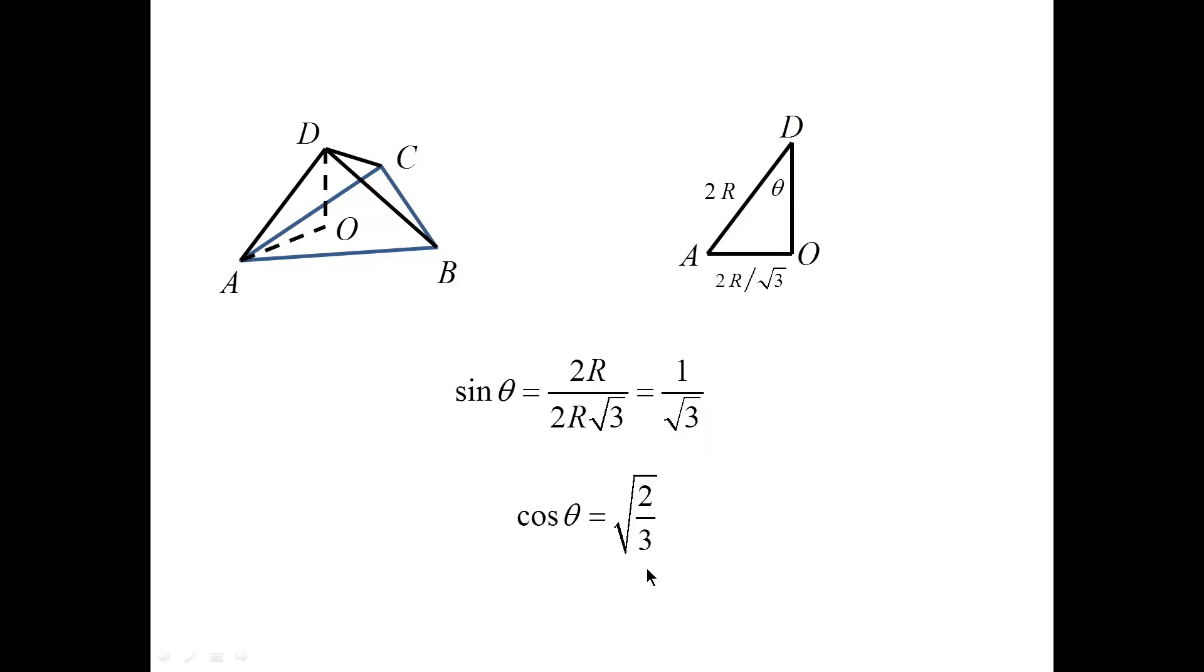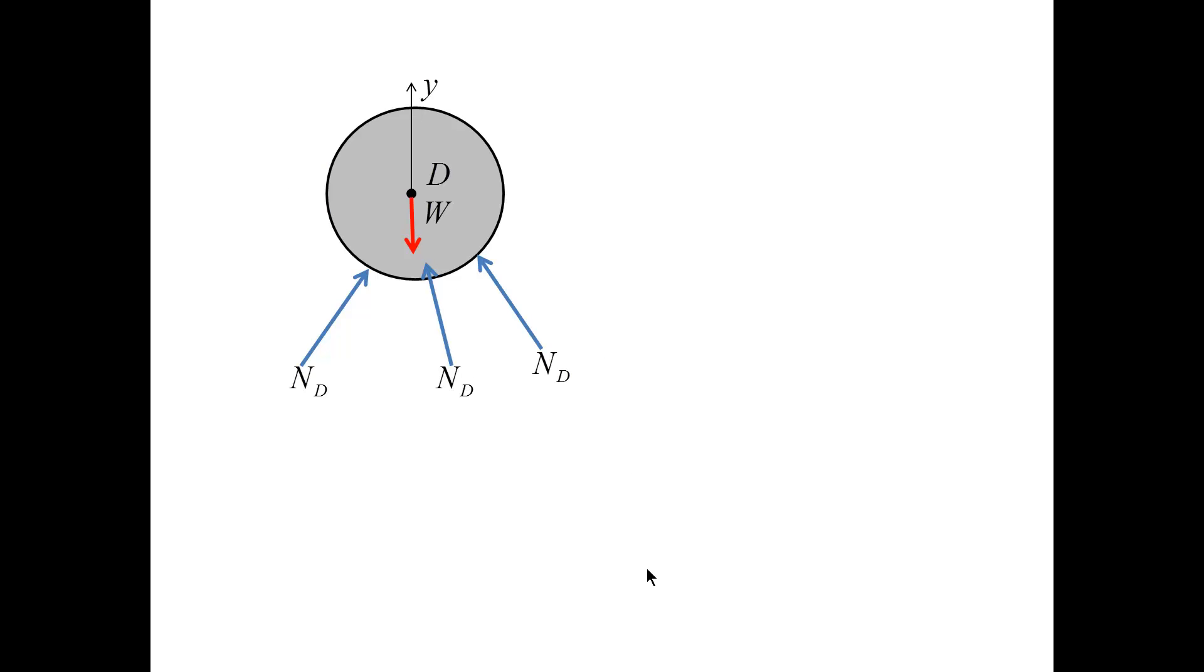Now I know the angle theta, and I am ready to proceed with writing down equilibrium equations. First, let me consider the free-body diagram for the top ball. The forces exerted on this ball are the weight and the normal forces exerted by the lower balls. From symmetry, it is clear that these forces must be equal in magnitude. Therefore, I call all of them N sub D.